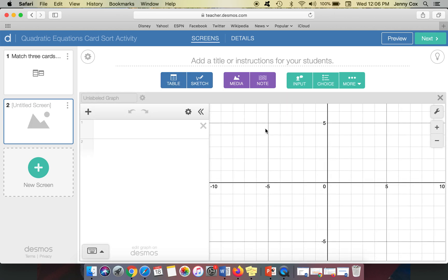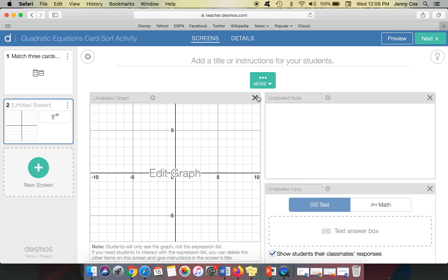I will say if you insert a graph, students aren't able to interact with that graph if you have more than one thing on the screen. So if I put like an input and a note, and I said something like, match the black parabola to the red parabola.